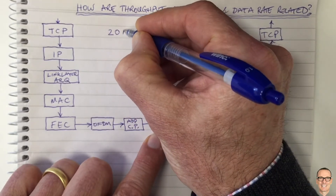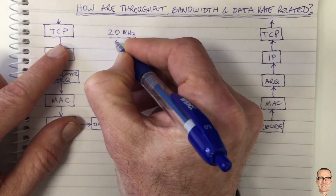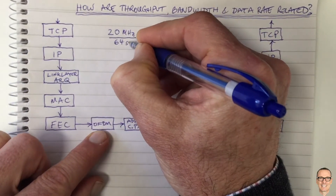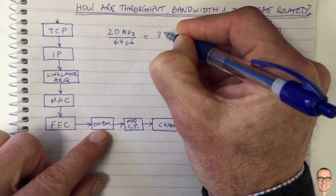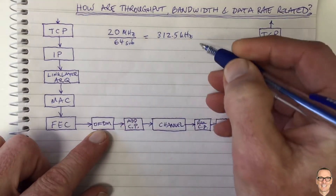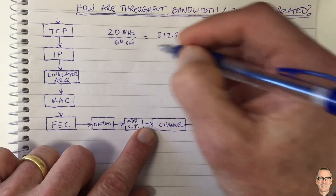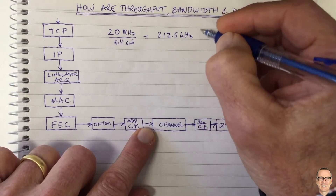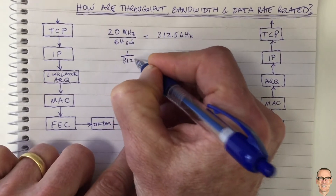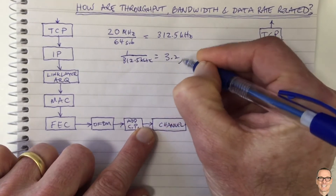For our 802.11a system, we typically have 20 MHz bandwidth channels, and we have 64 subchannels in our OFDM system — 64 subcarriers. This equals 312.5 kHz per subcarrier. That means we can be sending a symbol every OFDM symbol period. How long does it take to send that symbol? The symbol duration is 1 divided by 312.5 kHz, which gives us a symbol duration of 3.2 microseconds.